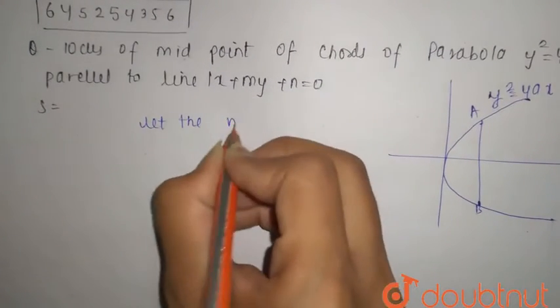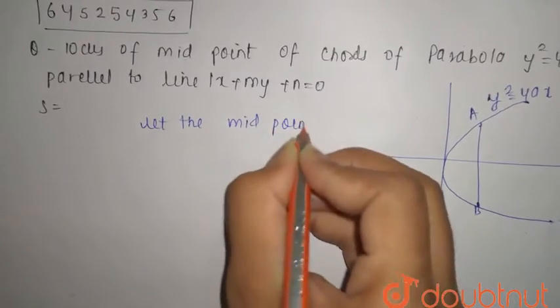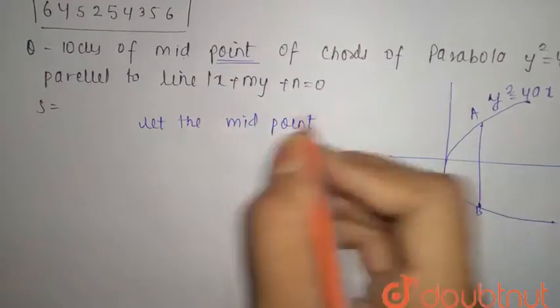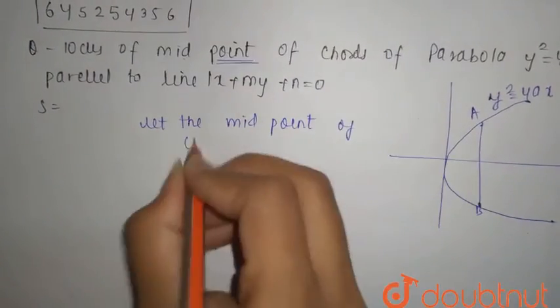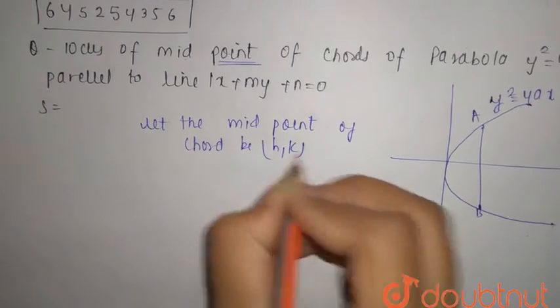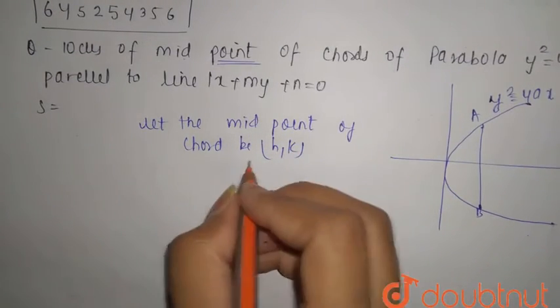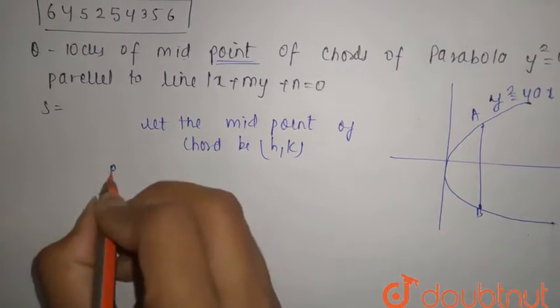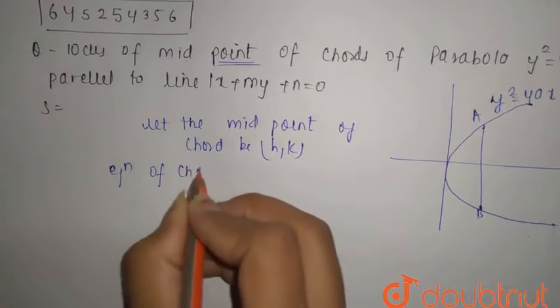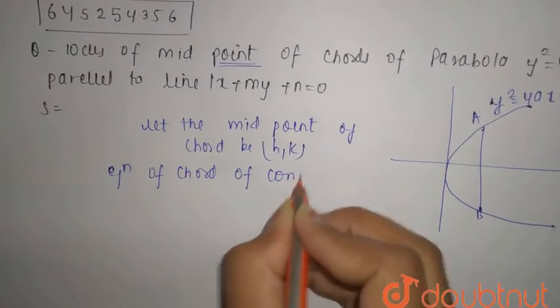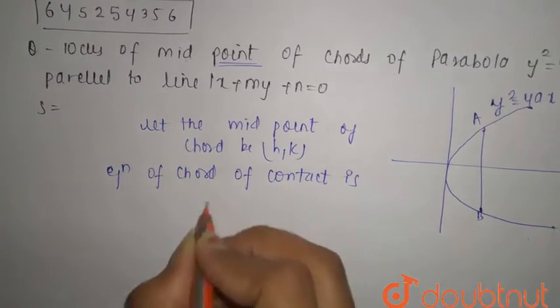Let the midpoint of chord be (h, k). Then the equation of chord of contact is: equation of chord of contact is S₁ = S₁₁.